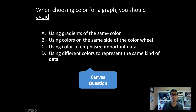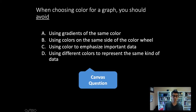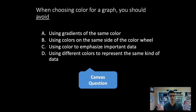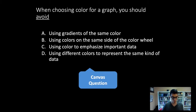For participation points on Canvas: when choosing a color for your graph, what should you avoid? Should you avoid using gradients of the same color, using colors on the same side of the color wheel, using color to emphasize important data, or using different colors to represent the same kind of data? The answer is you should avoid using different colors to represent the same kind of data—like that map with orange, pink, and purple all representing different levels of unemployment. All the other options are things you should actually do.